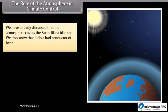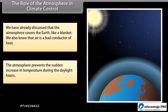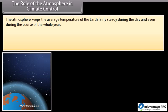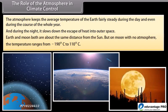The atmosphere covers the Earth like a blanket. Since air is a bad conductor of heat, the atmosphere prevents sudden increases in temperature during daylight hours and keeps the average temperature fairly steady during the day and throughout the year. During the night, it slows down the escape of heat into outer space. Earth and the Moon are both about the same distance from the Sun, but on the Moon with no atmosphere, the temperature ranges from -190 degrees Celsius to 110 degrees Celsius.